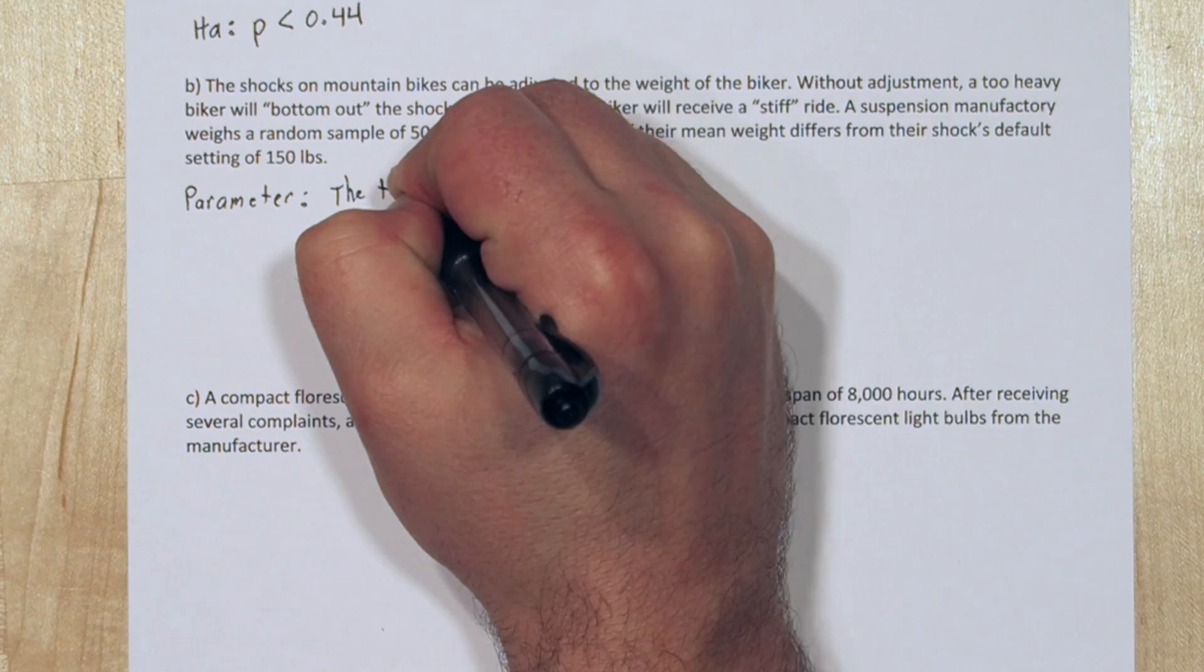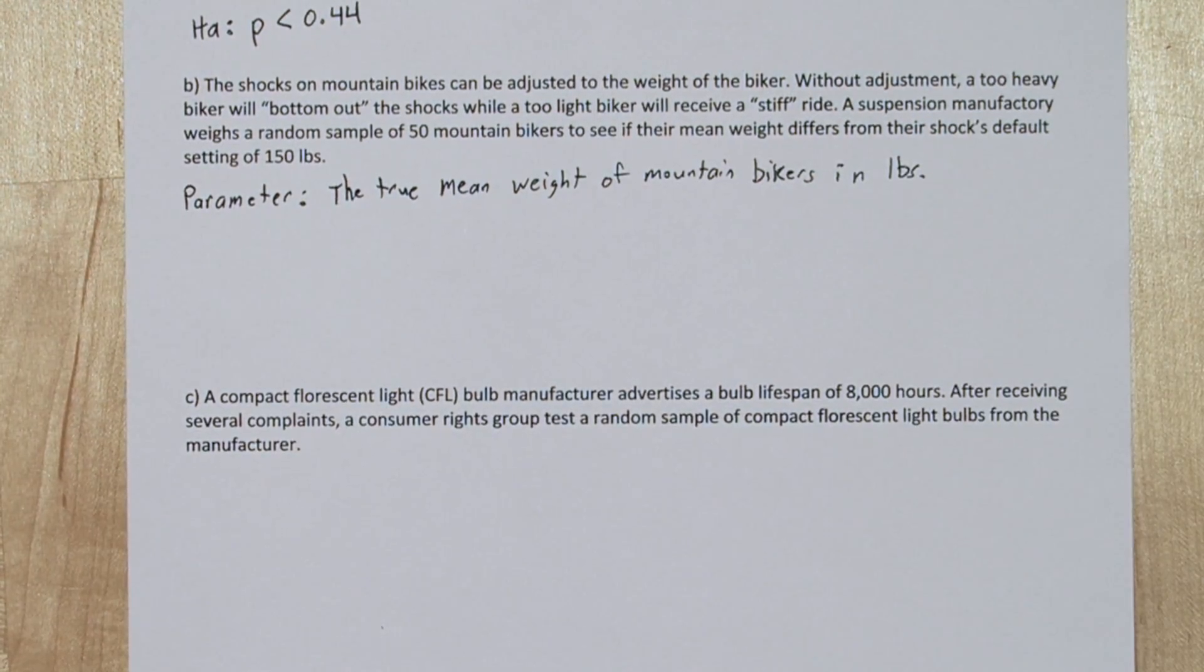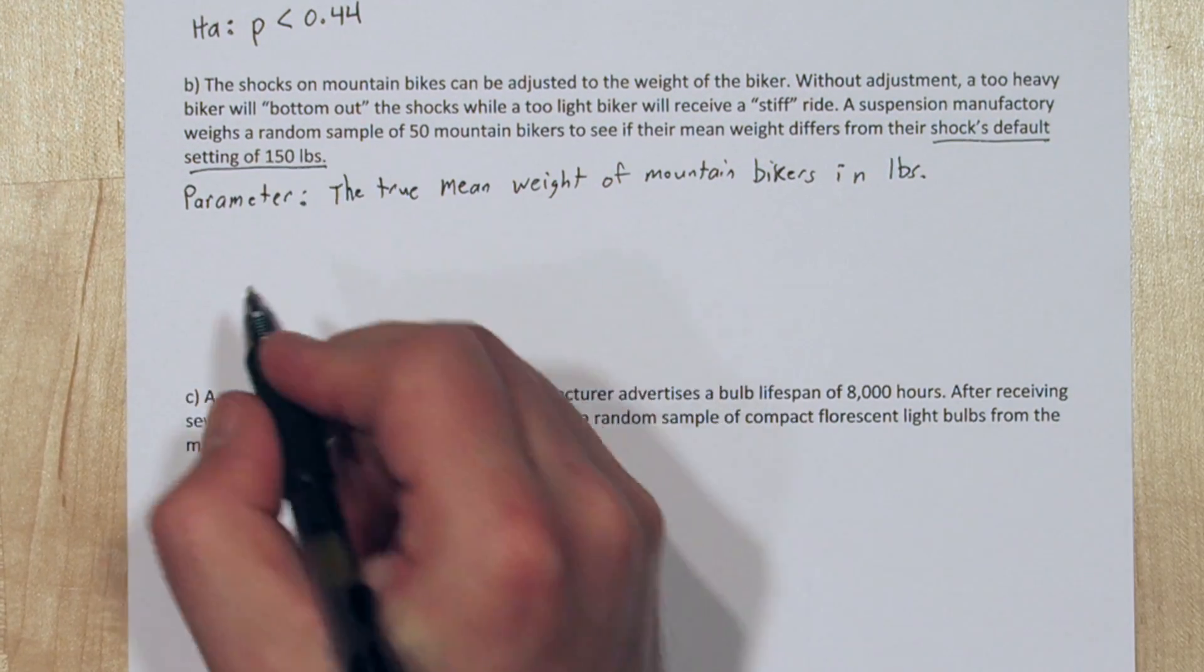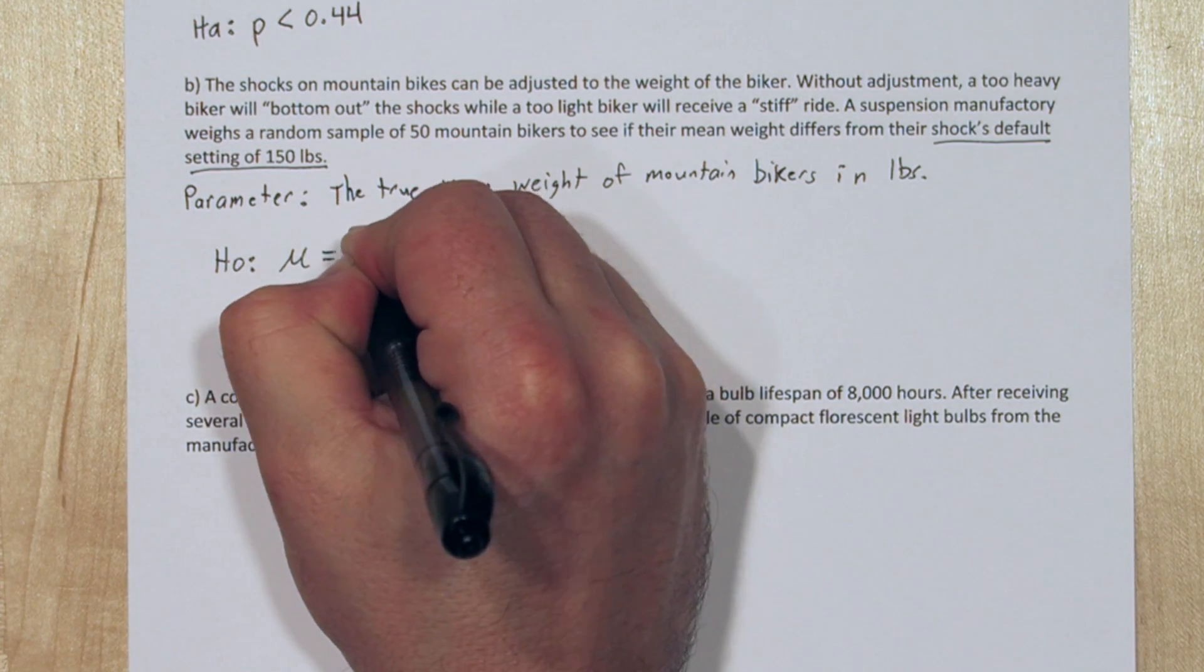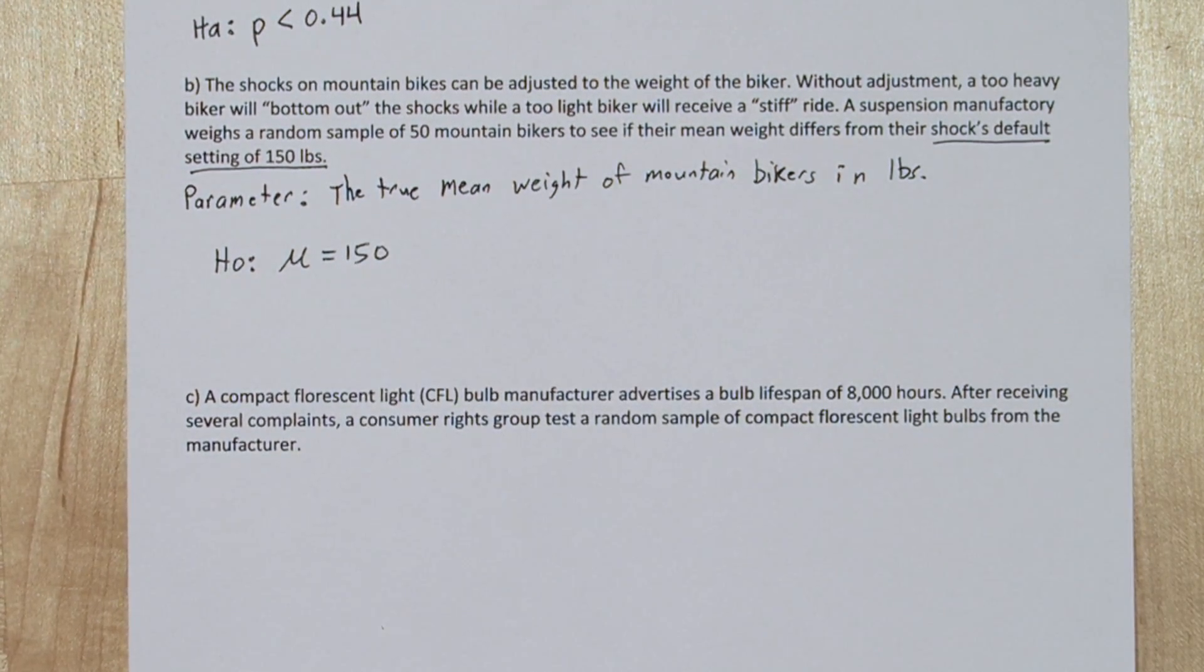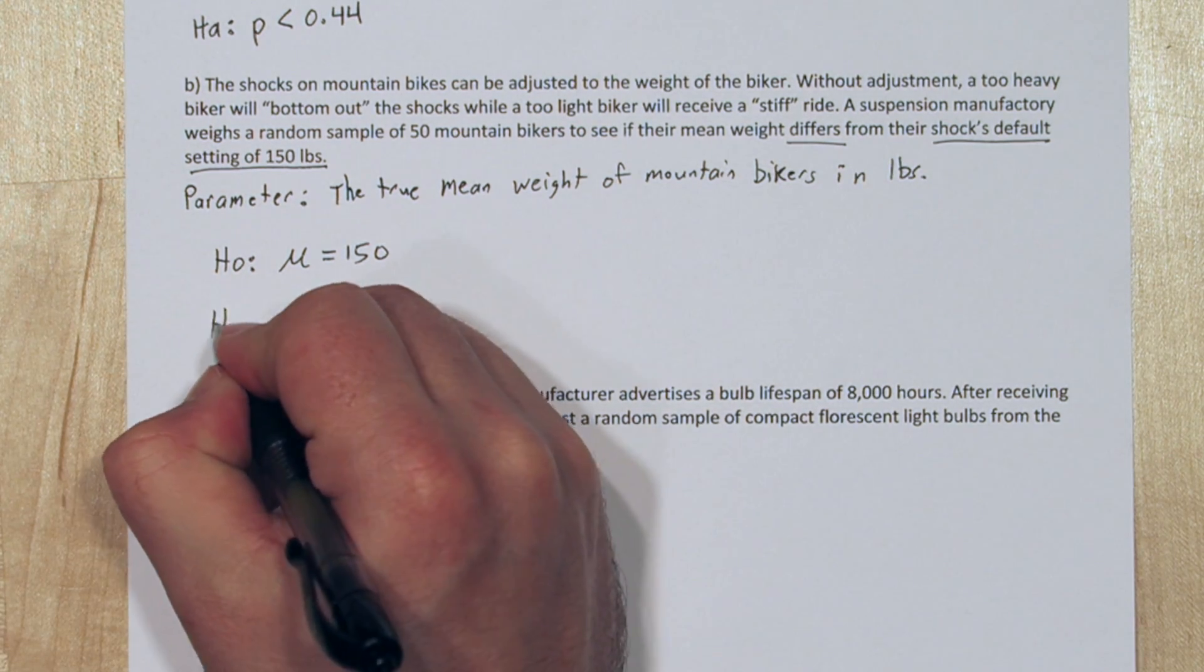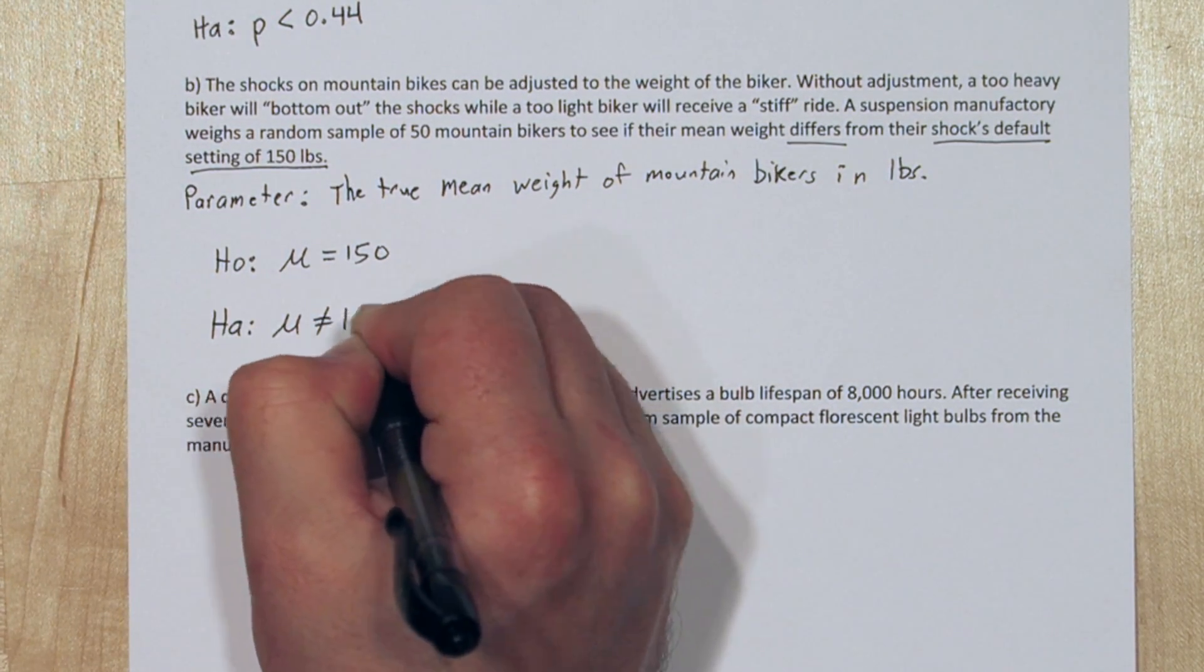In part B, the parameter of interest is the true mean weight of mountain bike riders in pounds. Since the default setting is 150 pounds, that's our null hypothesis, the status quo. The true mean, μ, equals 150. Since the manufacturer is interested in if this weight differs, the alternative hypothesis is that μ is not equal to 150.